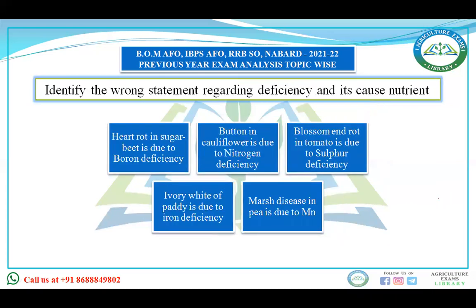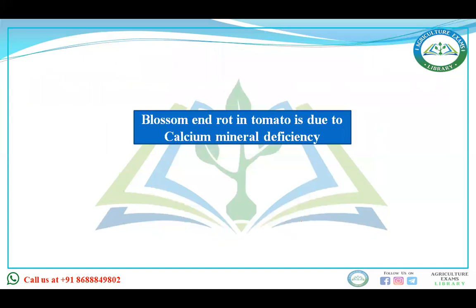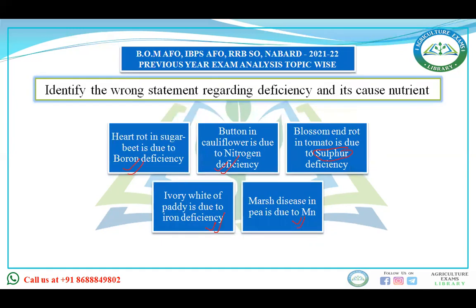Identify the wrong statement regarding nutrient deficiency: Hot rot in sugar beet is due to boron deficiency — correct. Burning in cauliflower is due to nitrogen deficiency. Blossom end rot in tomato is due to sulfur deficiency — this is wrong. Ivory white or die-back is due to iron deficiency — correct. Mass disease in pea is due to magnesium deficiency — correct. Blossom end rot in tomato is actually due to calcium deficiency, so that statement is the wrong one.